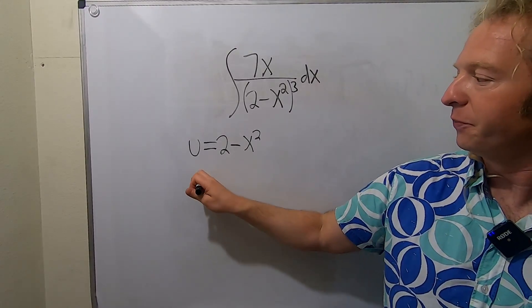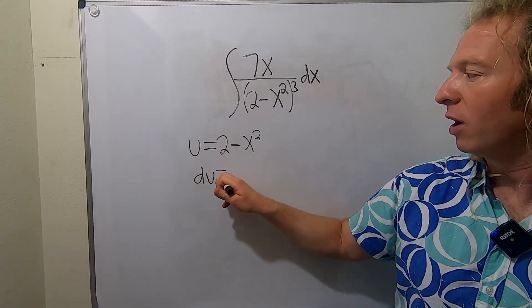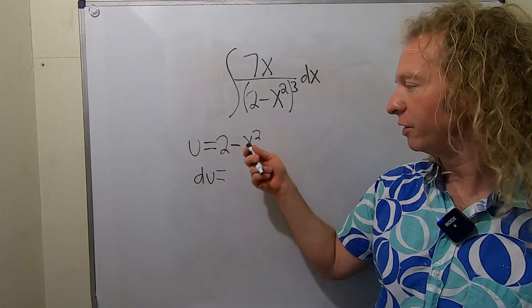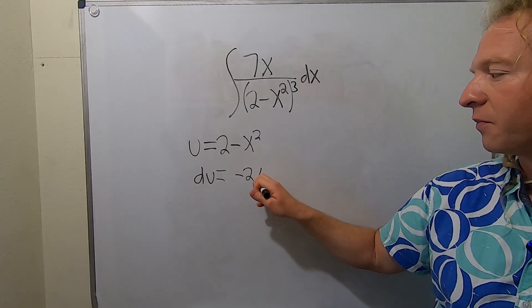Now we're going to compute du. The derivative of 2 is 0, so the derivative here will be negative 2x dx.